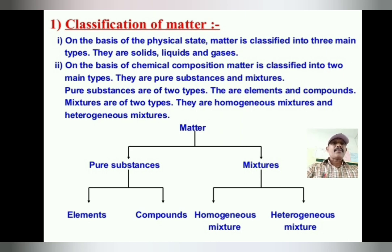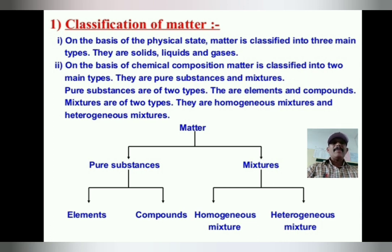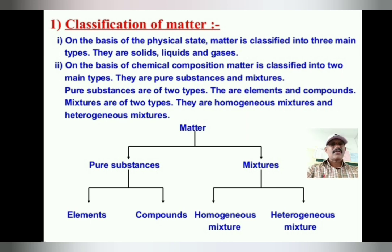On the basis of chemical composition, matter is classified into two main types: pure substances and mixtures. Pure substances are of two types: elements and compounds.